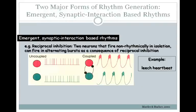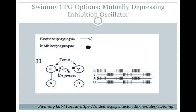The other form of rhythm generation involves emergent synaptic interaction-based rhythms. If you have two neurons — red and green — that fire non-rhythmically in isolation, and you hook them up with reciprocal inhibition, so they each have an inhibitory synaptic connection on each other, you can start to get this alternating on and off behavior between the two neurons. This type of rhythm generation is used in the CPG that controls the leech heartbeat. This form is also used in one of your SWIMME CPG options: the mutually depressing inhibition oscillator. If you have two tonically active cells, X and Y, you can hook them up with an excitatory synapse onto motor neurons A and B, and also have an excitatory synapse from X and Y onto inhibitory interneurons which synapse onto the opposite cell.